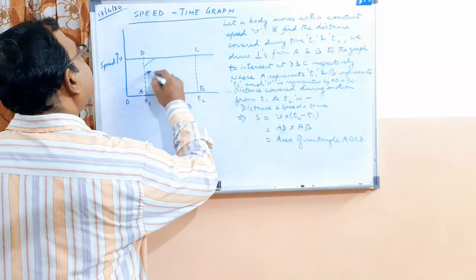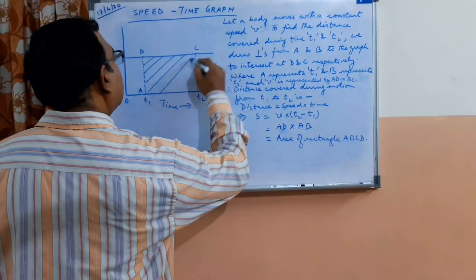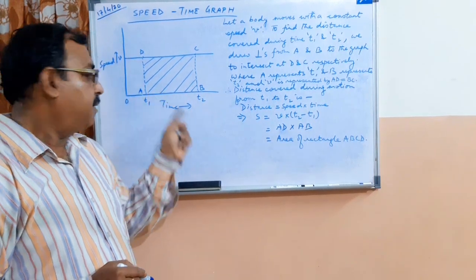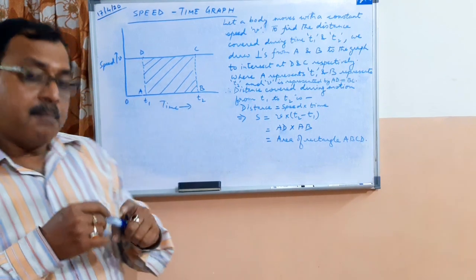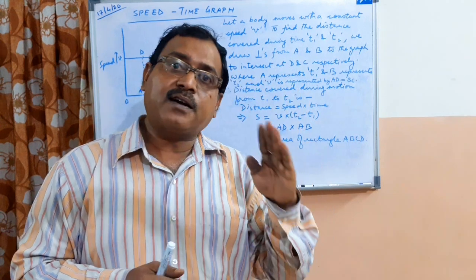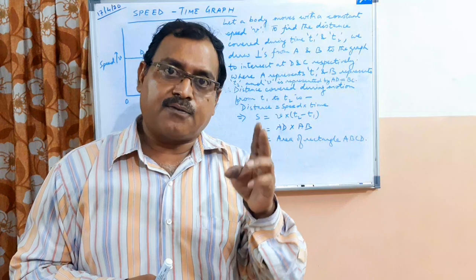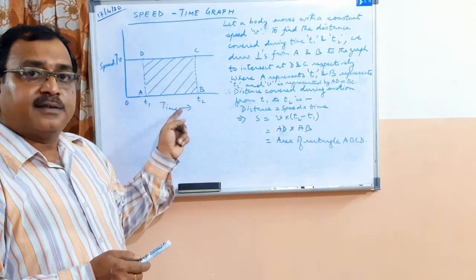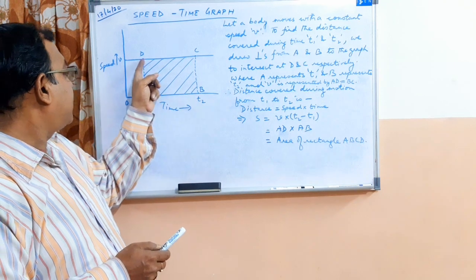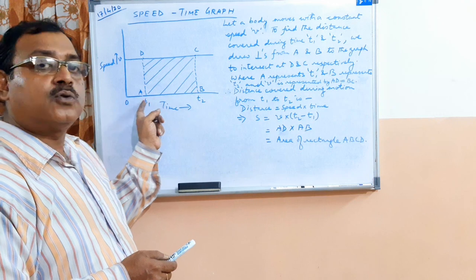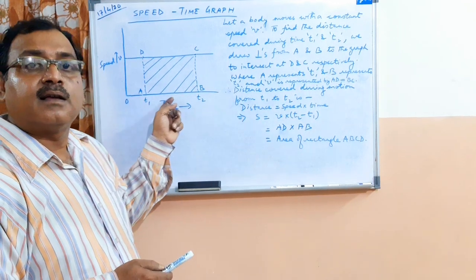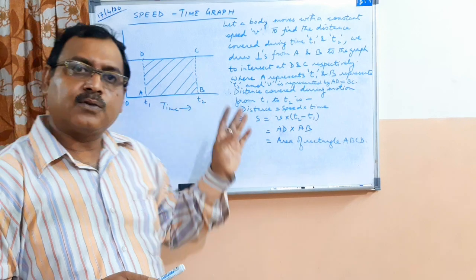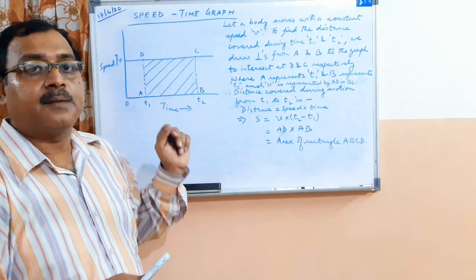The area of rectangle ABCD gives the distance covered by the body with speed V between time t1 and t2. Remember: in a distance-time graph the slope gives speed, in a displacement-time graph the slope gives velocity, and here the area of the geometrical figure formed within the perpendiculars drawn to the time axis gives the distance in a speed-time graph.